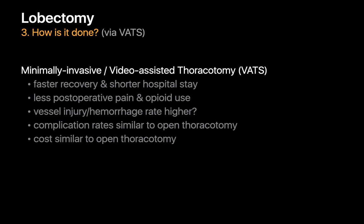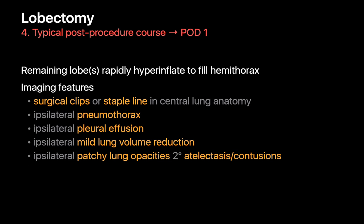Complication rates are similar between VATS and open thoracotomy, though there is some debate about whether bleeding complication rates may be slightly higher with VATS. The cost is pretty similar. After a lobectomy, the remaining lobes usually hyperinflate to fill some of the hemithorax almost immediately. Besides surgical clips and the occasional staple line, expected chest x-ray findings on post-op day one include ipsilateral pneumothorax, pleural effusion, mild ipsilateral lung volume reduction, bibasilar lung opacities from atelectasis, and focal patchy opacities from lung contusions caused by handling the lung during surgery.